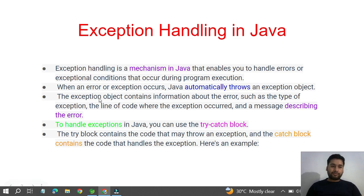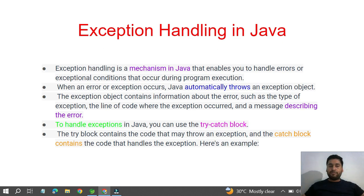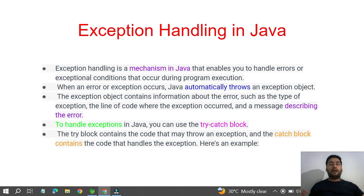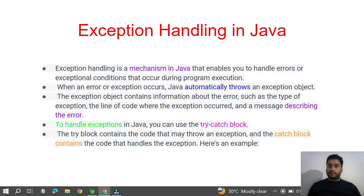The exception object contains information about the error. In a big project with 1000 or 2000 classes, if an exception just gives you a name, you can't understand where it occurred. Because of that, exception handling offers us the ability to put a message so we can understand exactly in which class, which method, and which package the exception occurred.